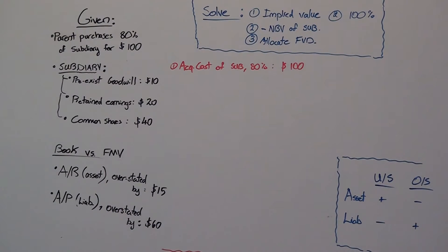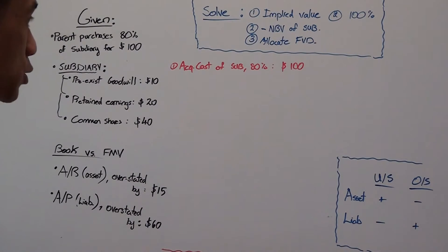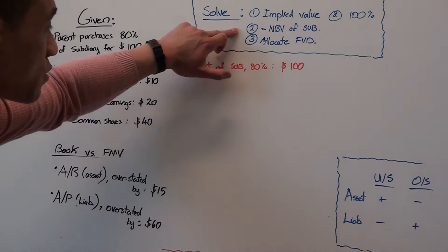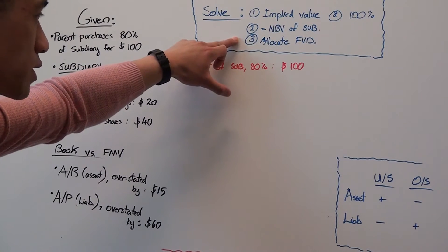During your consolidation exam you want to find your goodwill as quickly as possible. There's usually three phases to finding goodwill. First is to find the implied value of the sub at 100%, second is to find the netbook value of the sub, and third is to allocate your fair value differences.